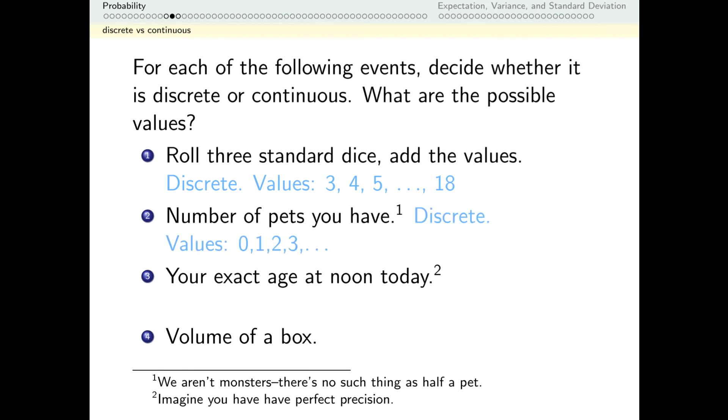Now my exact age at noon today, if I have perfect precision, I could be 20. I could be 21. I could also be 20 and a half. I could be any number in between there. I could be 20.127 years old. So this is continuous.